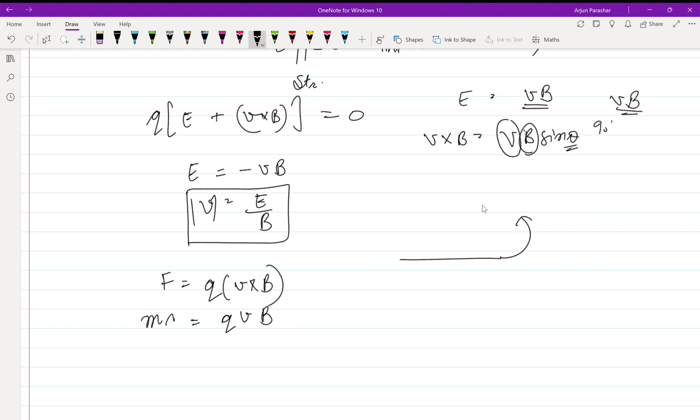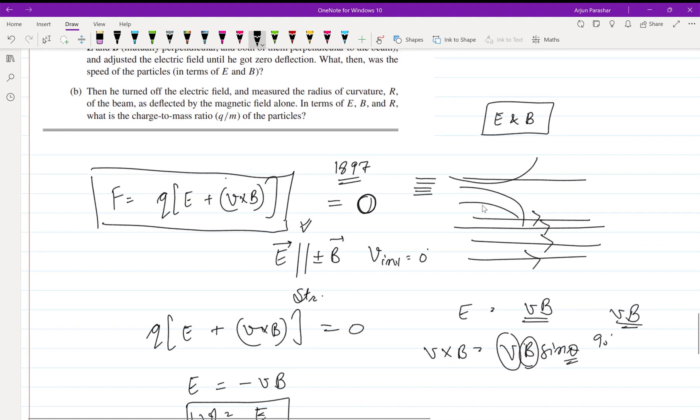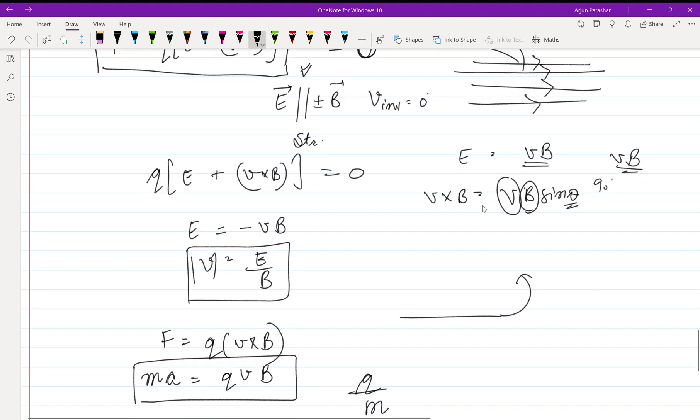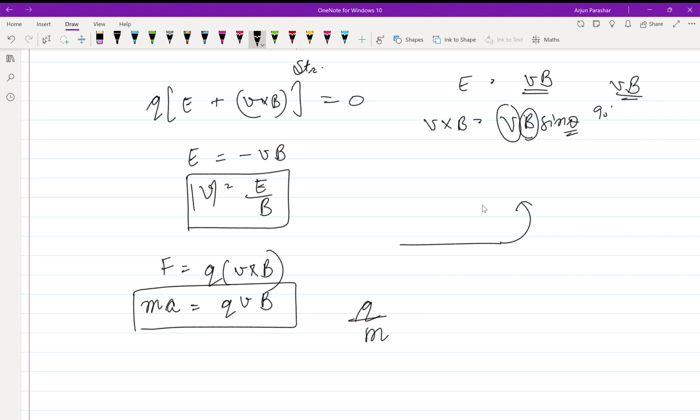We can take the derivation from the first example. We need to calculate the q by m ratio in terms of B, E, and R. We have B, we also have v from where we can get E, and we need R only. So we can directly apply the momentum formula.